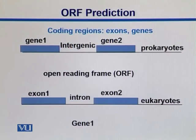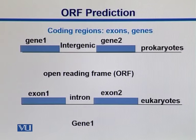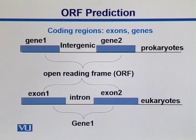Here in this slide, we see the ORF in a comparison between prokaryotic and eukaryotic cells. Prokaryotes may be bacteria or some related organisms; the rest of the organisms are mostly classified as eukaryotes. In a prokaryotic situation, we have different genes separated by intergenic regions, and ORFs can span these two genes. In eukaryotes, we have just one gene with exon 1 and exon 2, and the ORF spans across these different exons.